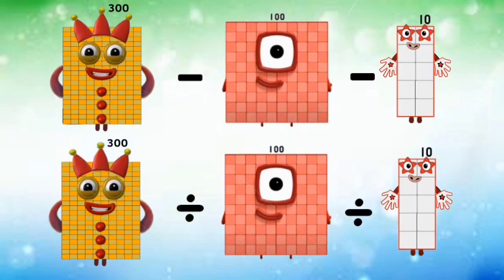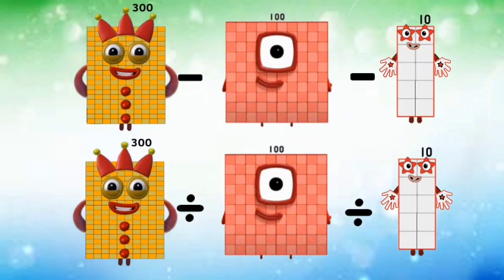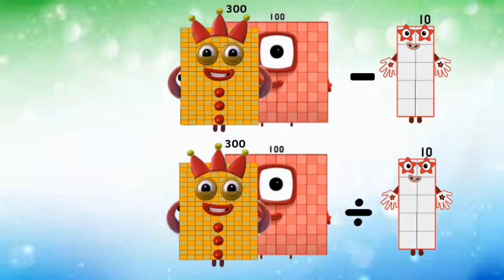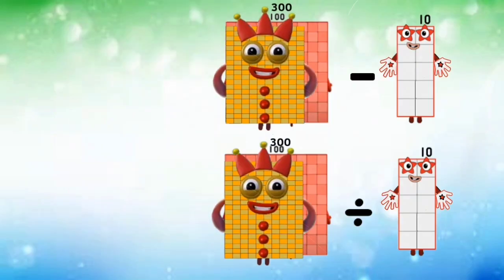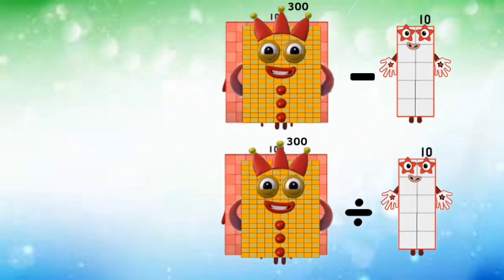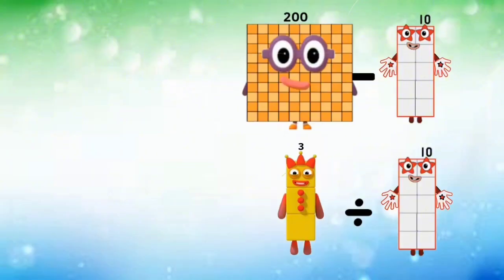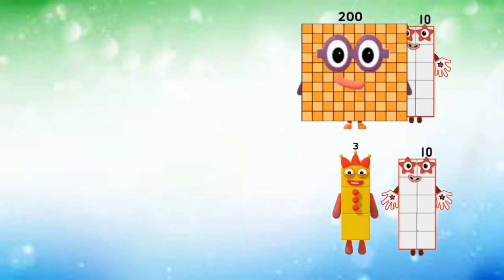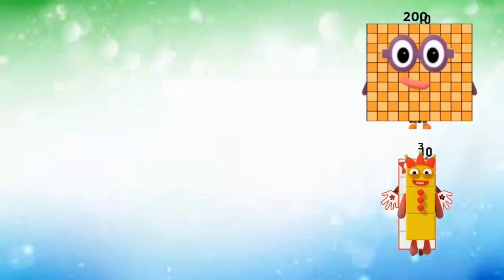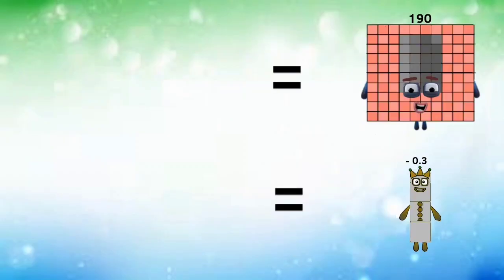300 subtracted and divided by 100 equals 203. 300 minus 10 and 3 divided by 10 equals 190 and negative 3.